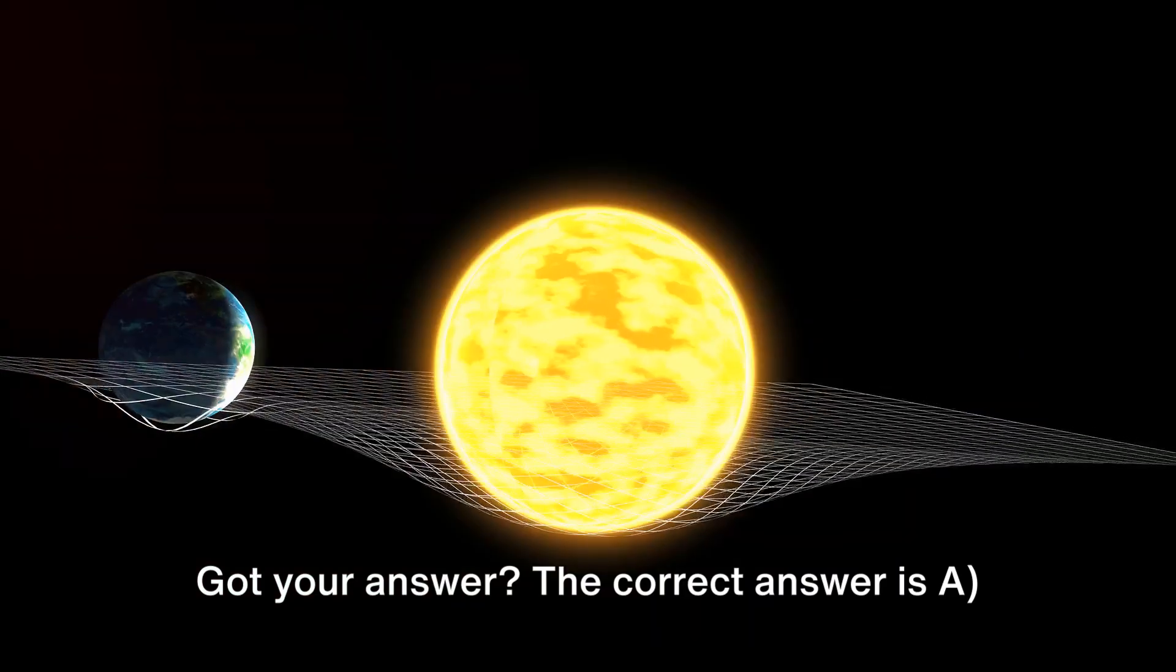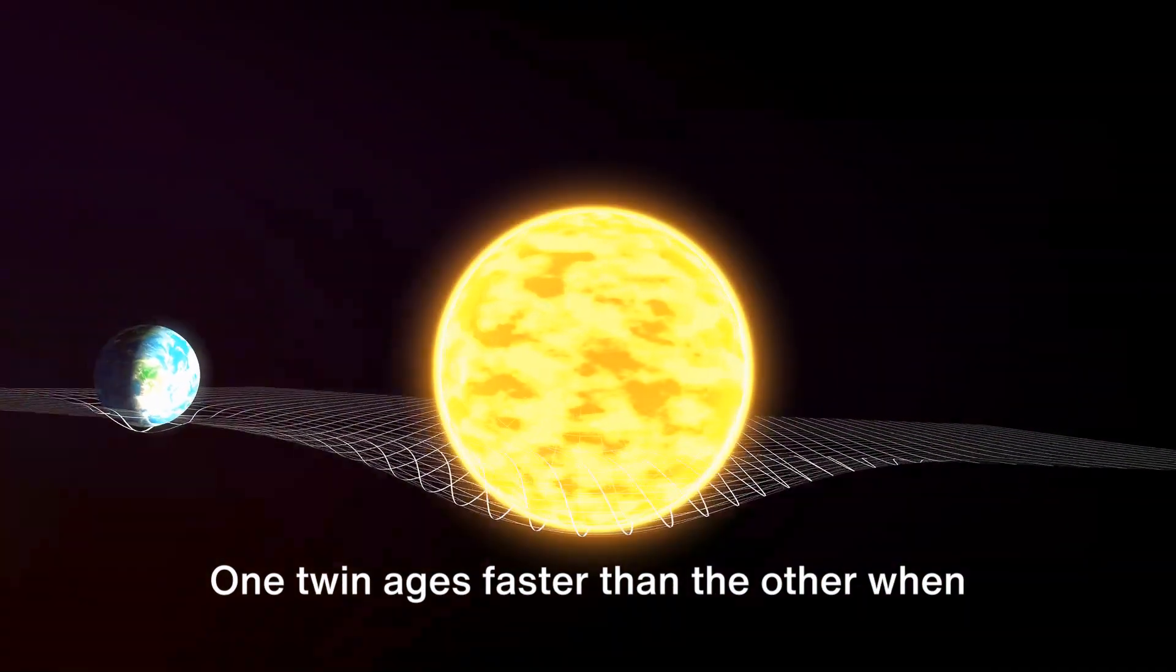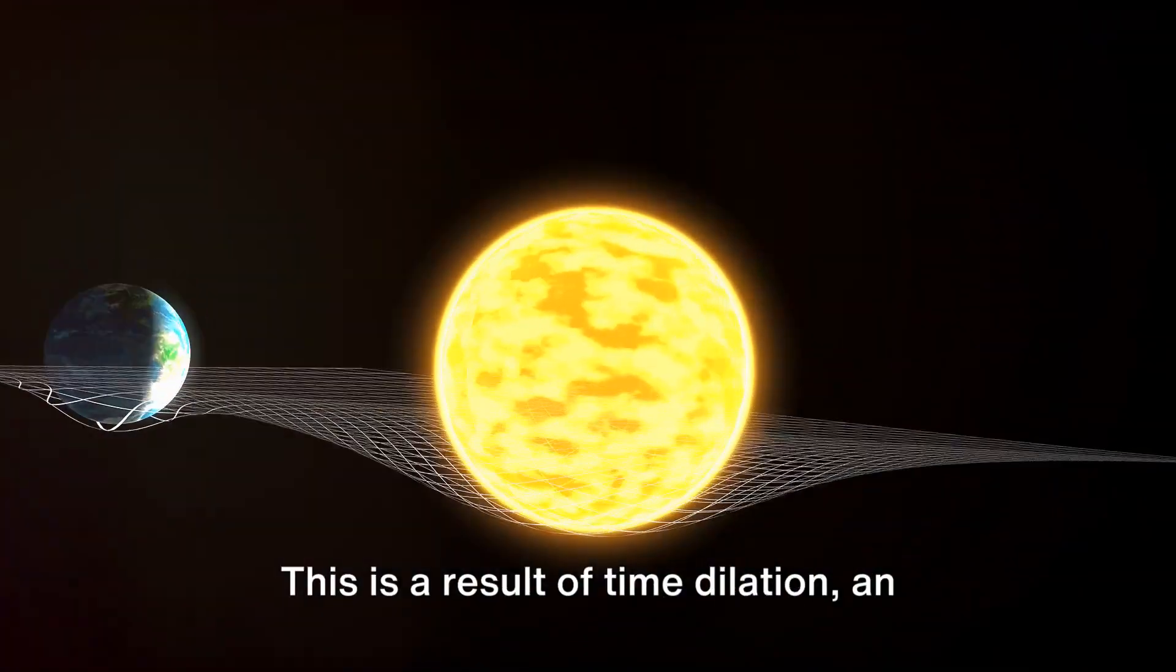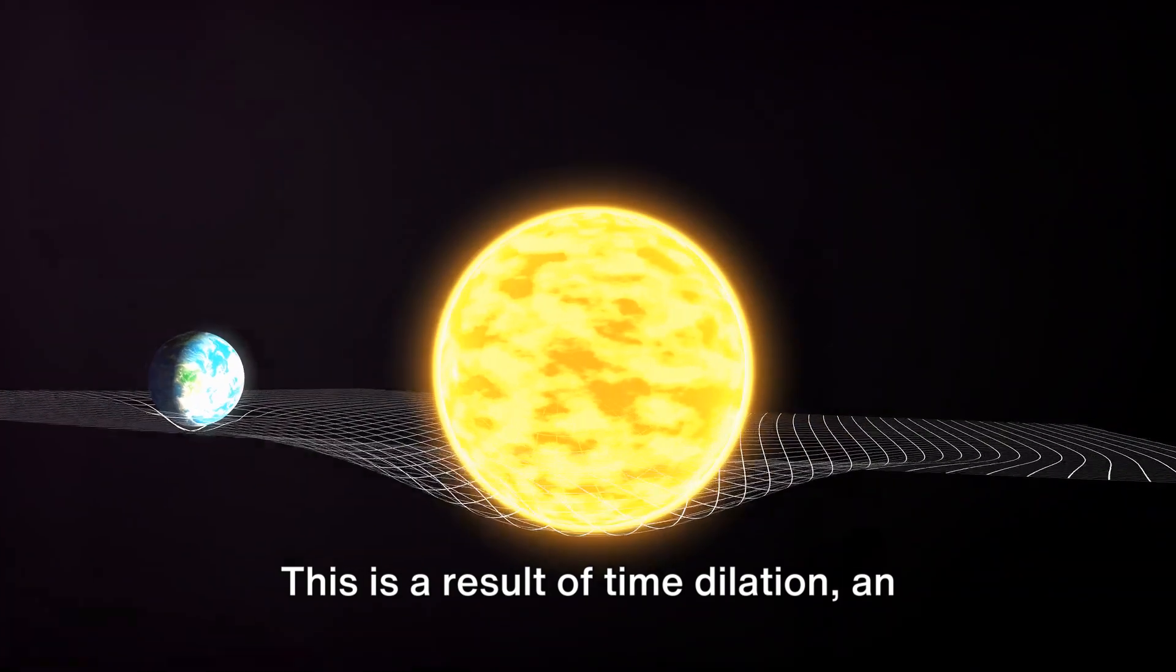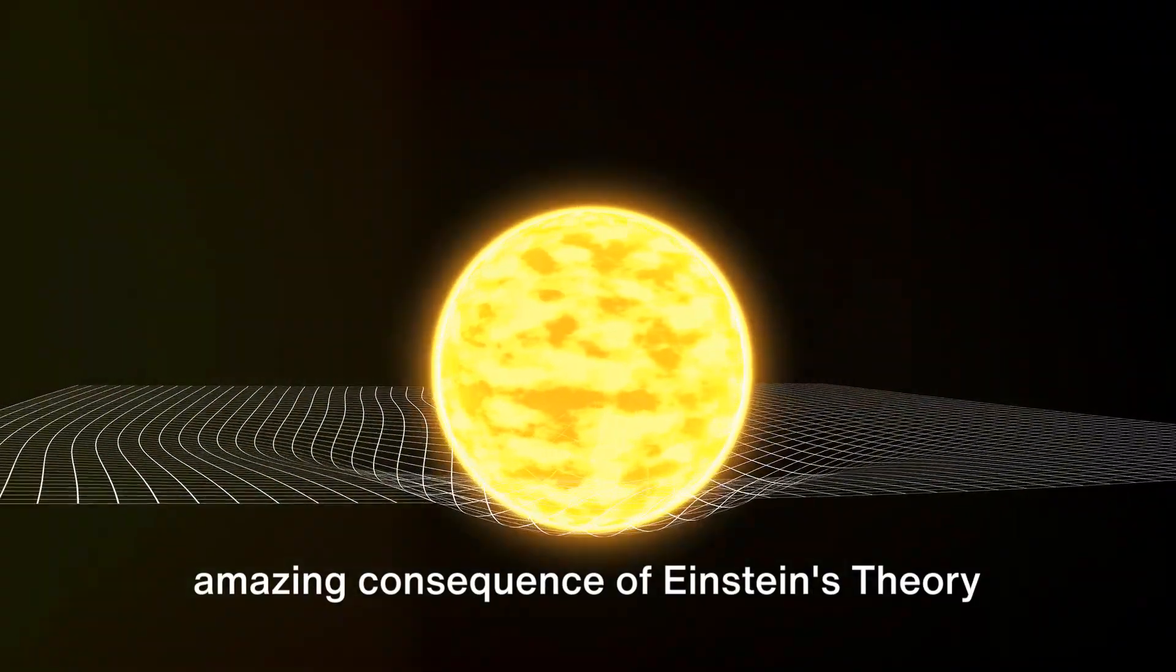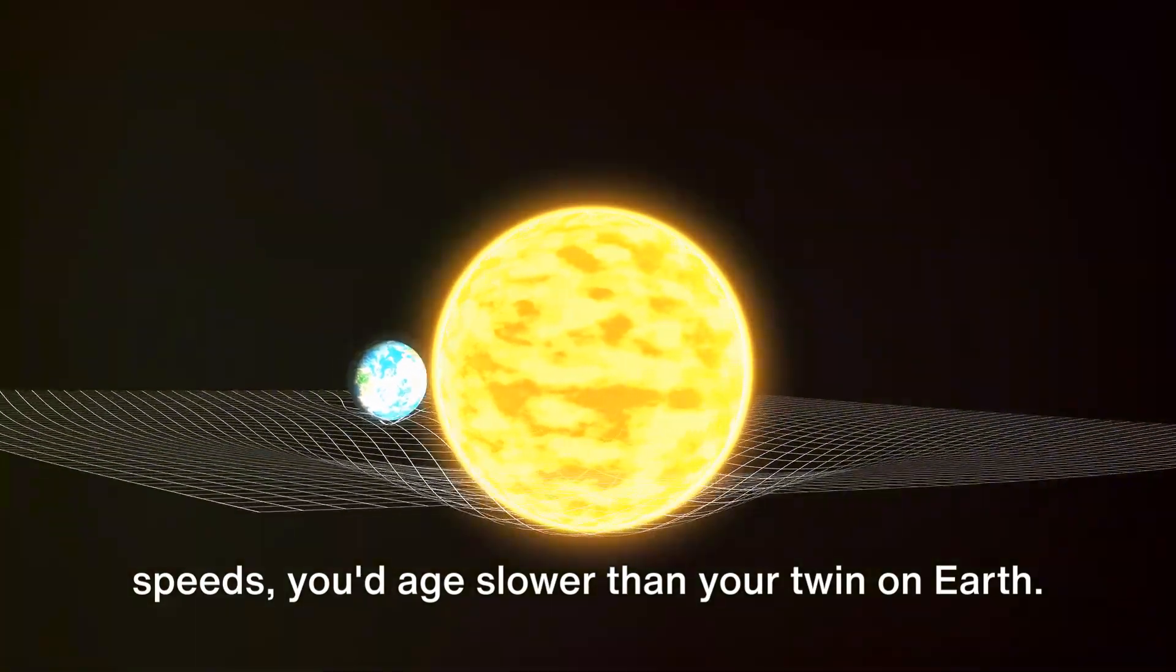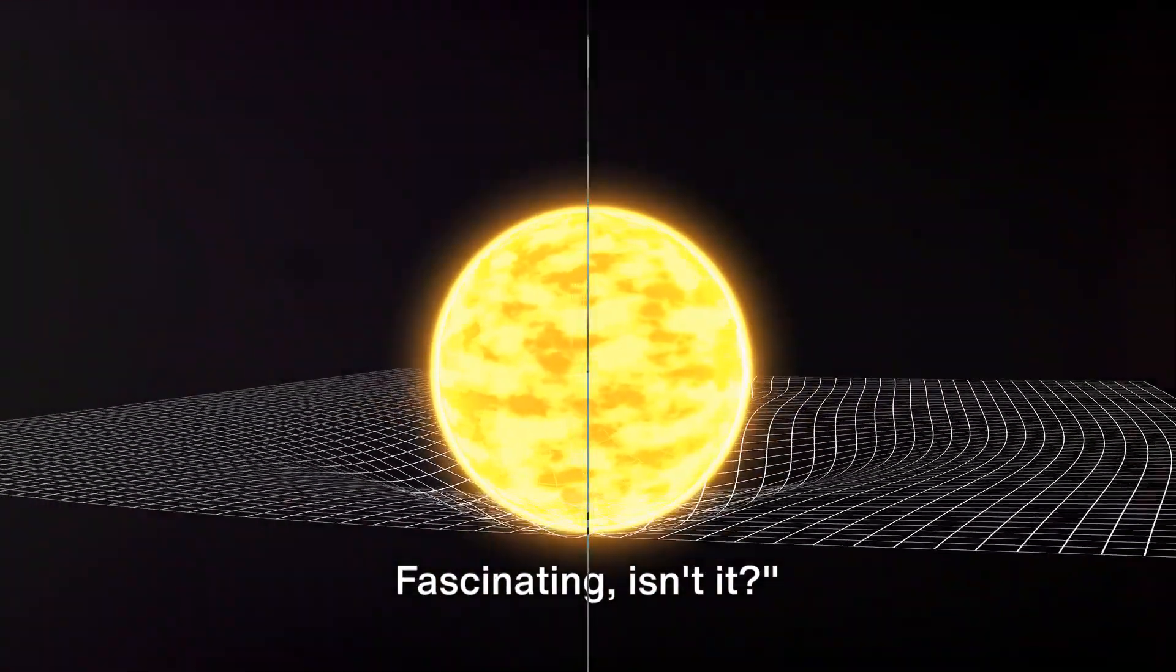Take a moment to ponder. Got your answer? The correct answer is A. One twin ages faster than the other when traveling at high speeds. This is a result of time dilation, an amazing consequence of Einstein's theory of relativity. Imagine if you could travel at high speeds, you'd age slower than your twin on Earth. Fascinating, isn't it?